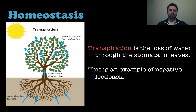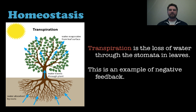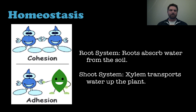For homeostasis, we need to introduce the concept of transpiration — the loss of water through those openings in the leaves called stomata. This occurs through a negative feedback loop system: water is absorbed by the roots, it goes up through the plant, and it evaporates from the leaf surface. The plant regulates this very tightly — when it needs to hold onto water it does, when it needs to get rid of water it does, all based on negative feedback.